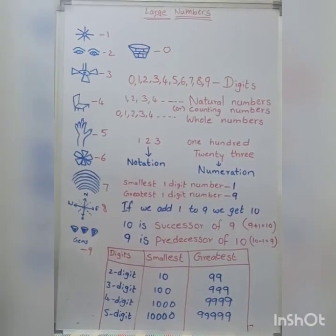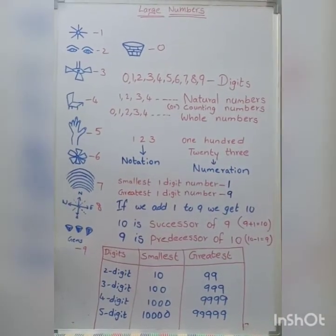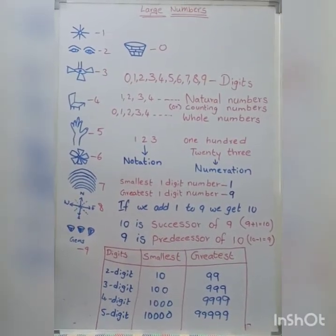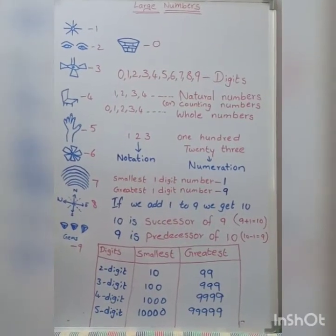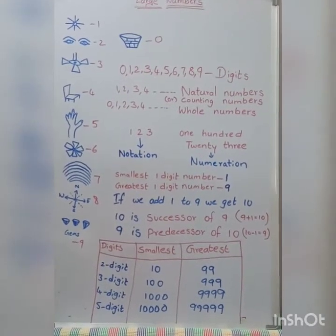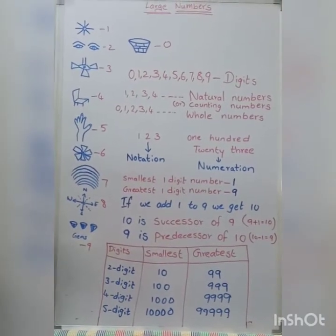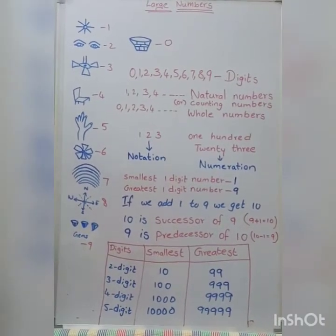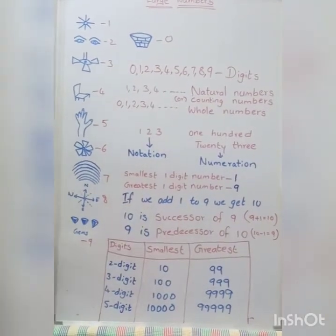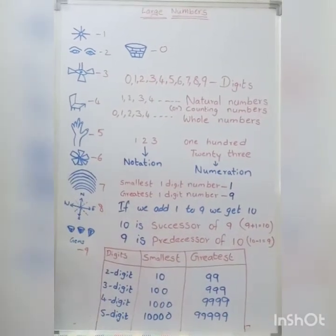What is the smallest 1-digit number? That is 1, not 0 — because there is nothing to compare, that is why 1 is the smallest 1-digit number. The greatest 1-digit number is 9. If we add 1 to 9, we get 10. If we add 1 to any number, we get the successor. If we subtract 1 from any number, we get the predecessor.